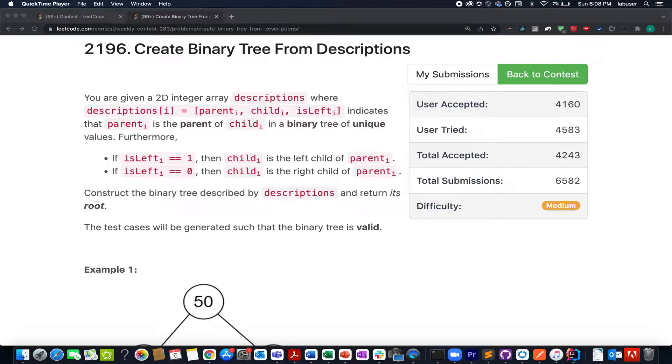Hello everyone, continuing the series of weekly contest 283, the third question in the list is create binary tree from descriptions. In this question we are given a 2D array wherein each description element has three properties: the first one is a parent, the second one is child, and third one signifies whether this child happens to be the left child or the right child of the given parent.